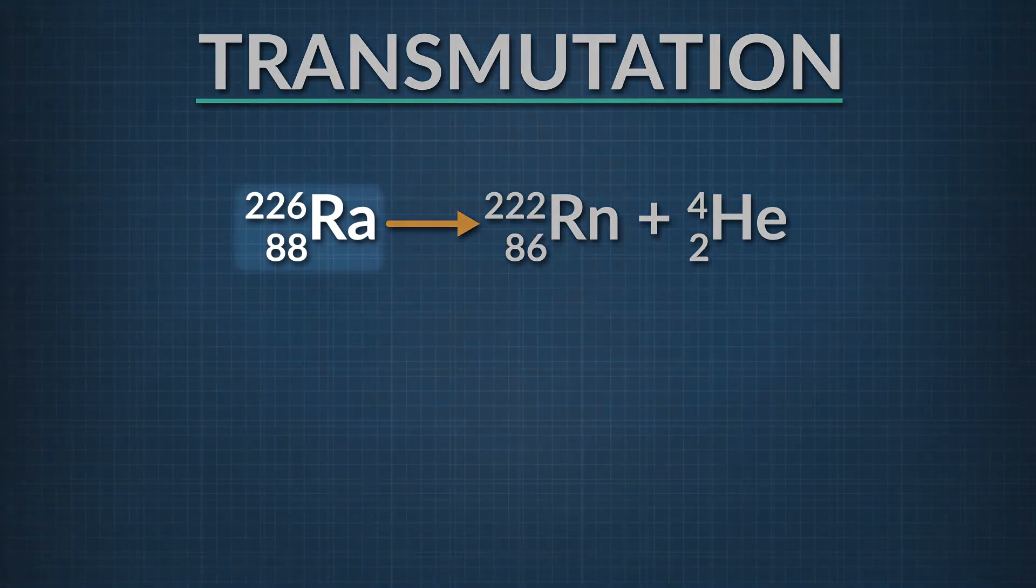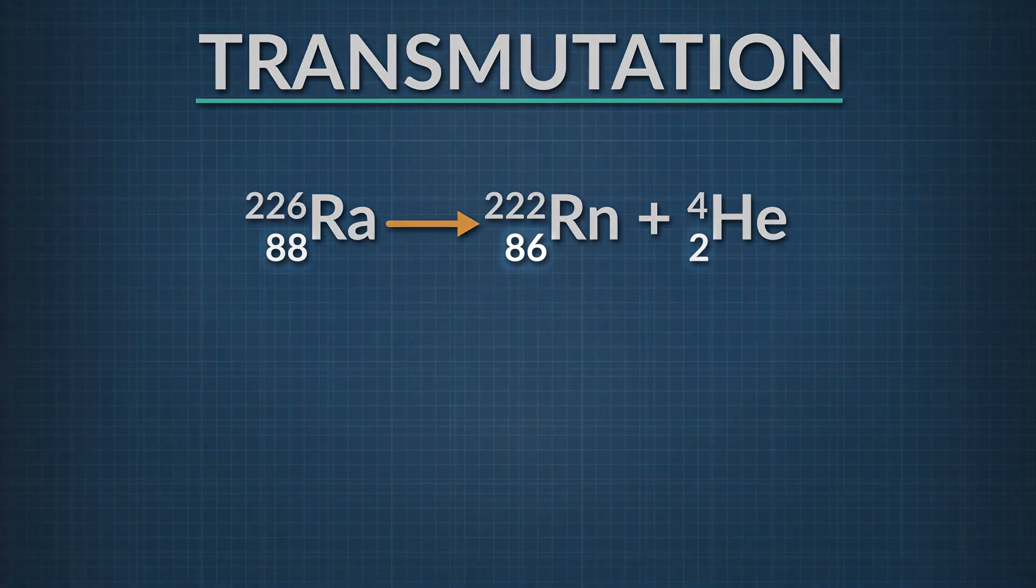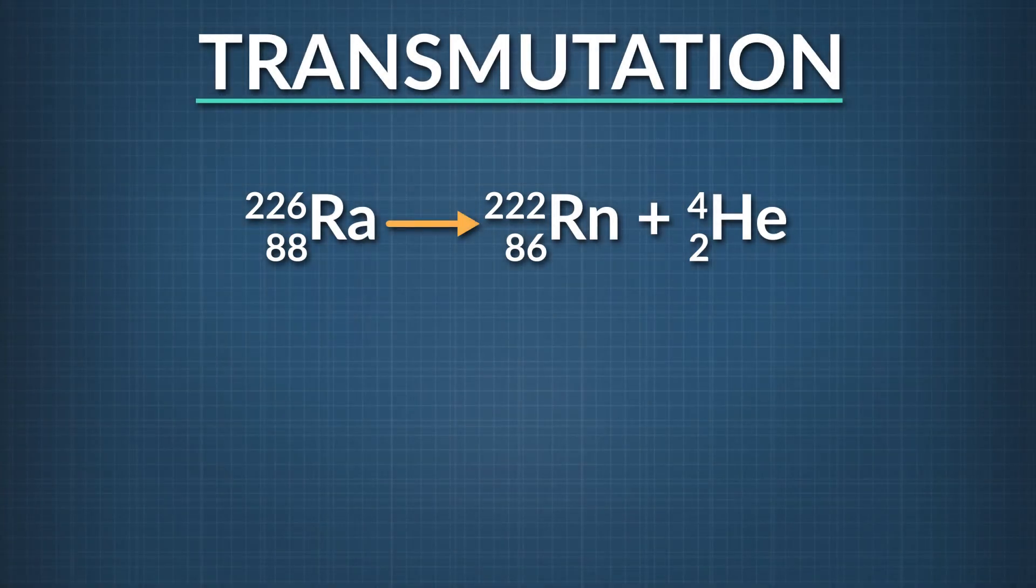In the first example, radium-226 turns into radon-222 plus an alpha particle. During this transmutation, the atomic number decreases by 2 and the mass number decreases by 4. We know radon is formed because it is element number 86 on the periodic table.